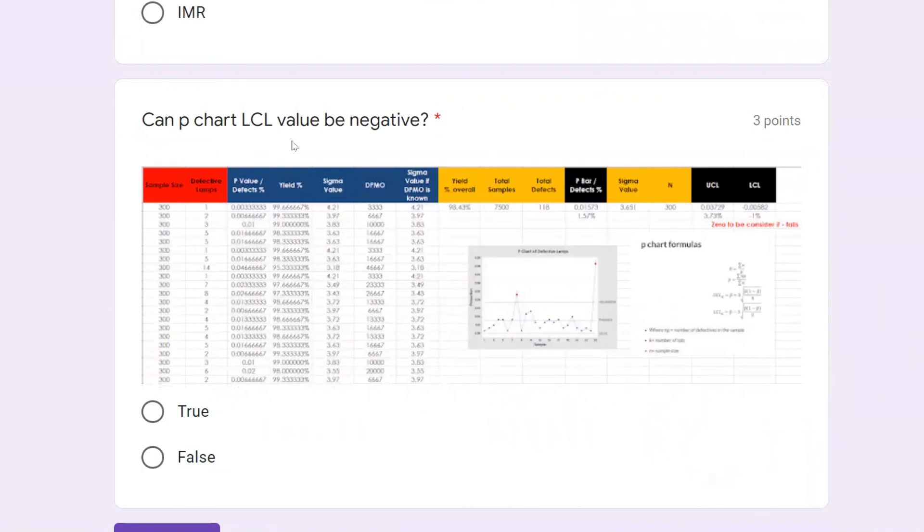Can P chart LCL value be negative? No, we should not. Because rejection cannot be a minus value. Even if you get a minus value, you should put it as zero. In this example, LCL is zero, so false.